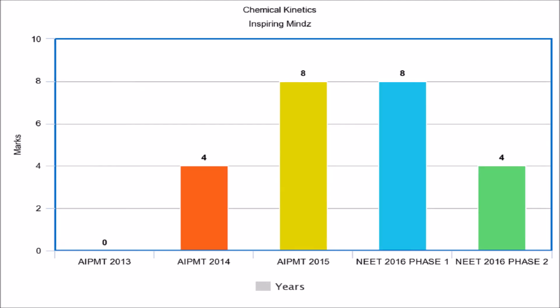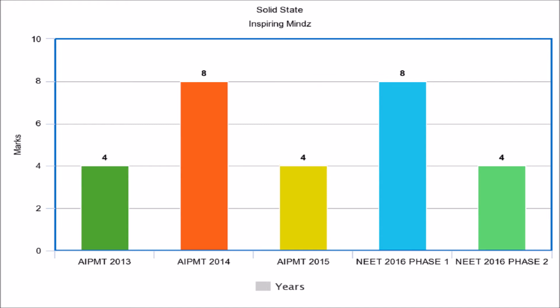For chemical kinetics, in AIPMD 2013 no questions were asked. In AIPMD 2014 and NEET 2016 Phase 2, 4 marks of questions were asked, which increased to 8 marks in AIPMD 2015 and NEET 2016 Phase 1.